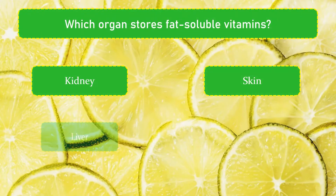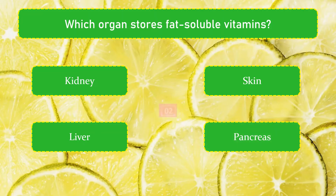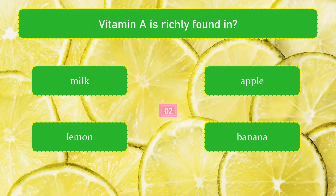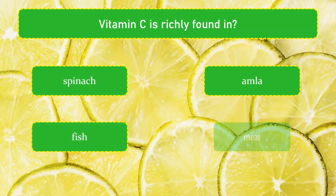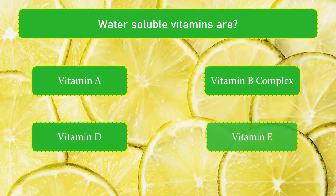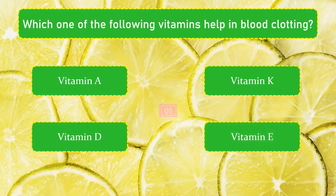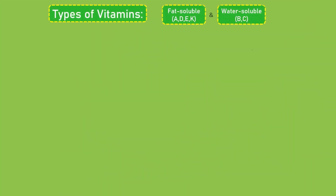Which organ stores fat-soluble vitamins? Liver. Vitamin A is richly formed in milk. Vitamin C is richly formed in amla. Water-soluble vitamins are vitamin B complex. Which one of the following vitamins helps in blood clotting? Vitamin K.